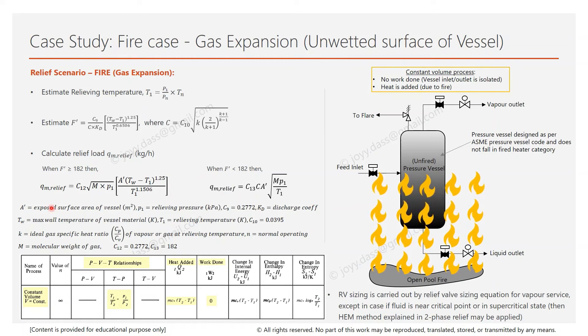Once the required relief load is estimated, it is used in sizing equation for vapor service. So the relief valve sizing equation for vapor service is used to calculate the required relief valve orifice size. Except in case the relieving pressure is near critical point or in supercritical state, then this equation cannot be used and M method explained in two-phase relief has to be used.